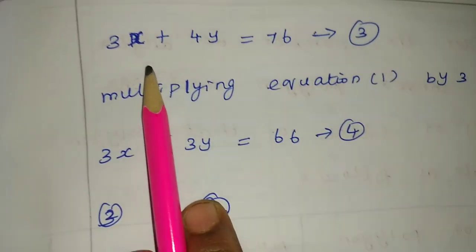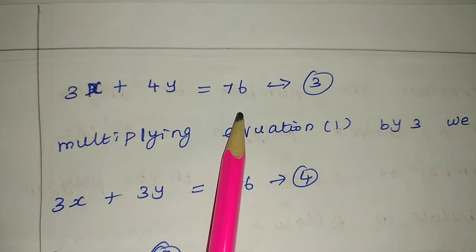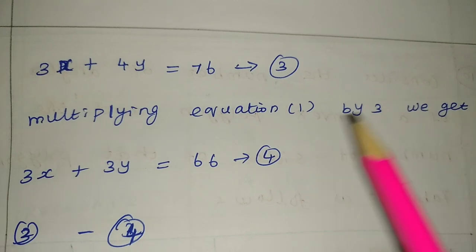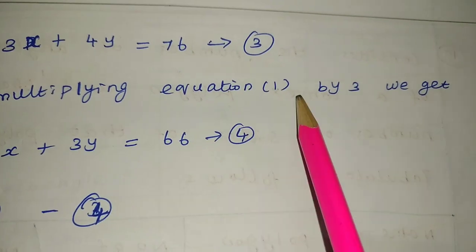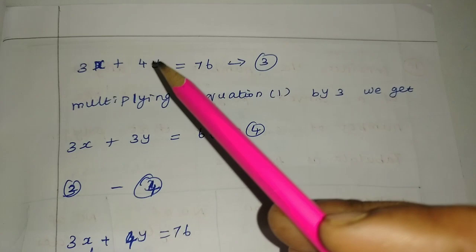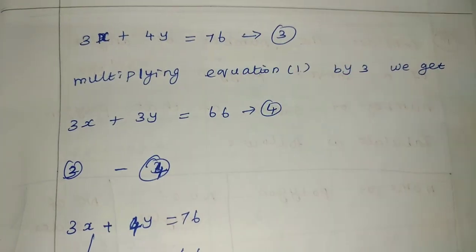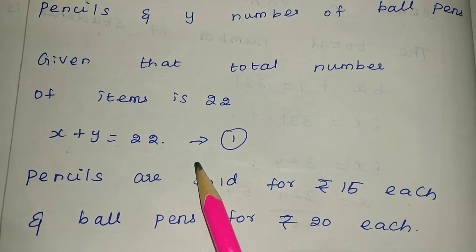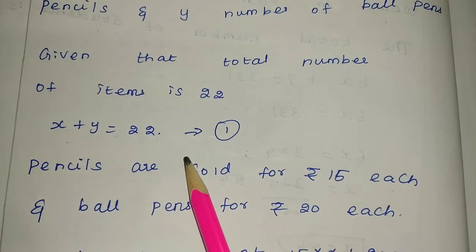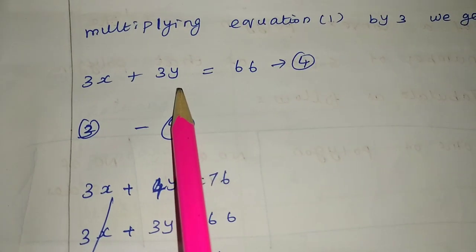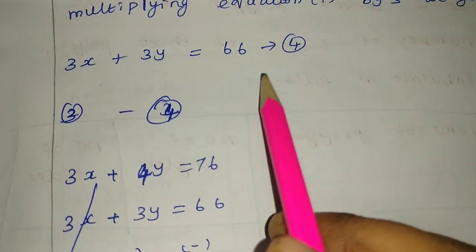We have: x + y = 22 and 15x + 20y = 380. Dividing the second equation by 5 gives 3x + 4y = 76. This is the third equation. Multiplying equation 1 by 3 gives 3x + 3y = 66.